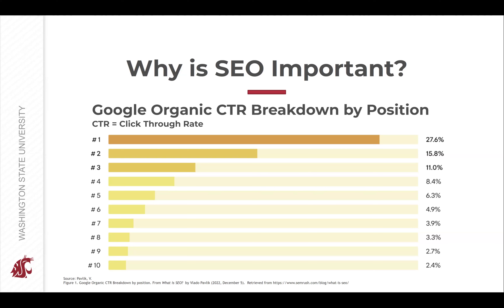The number one organic result is 10 times more likely to receive a click than the page ranking in the number 10 position. And the top three organic search results get more than 50% of all clicks. In other words, neglecting SEO would mean you're neglecting one of the most important traffic channels and leaving the space completely open to your competitors.